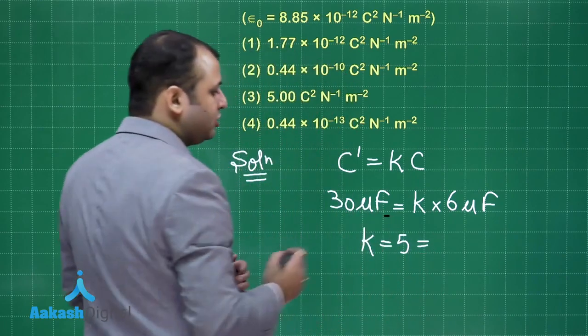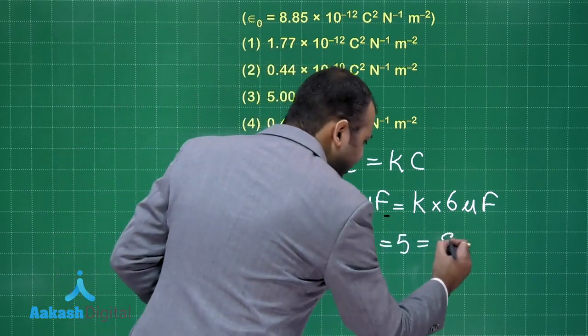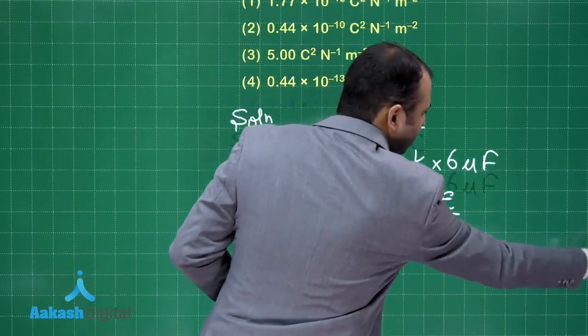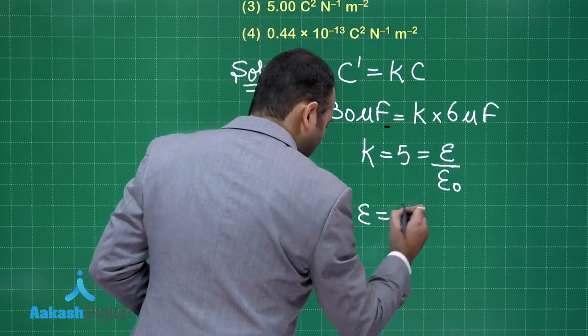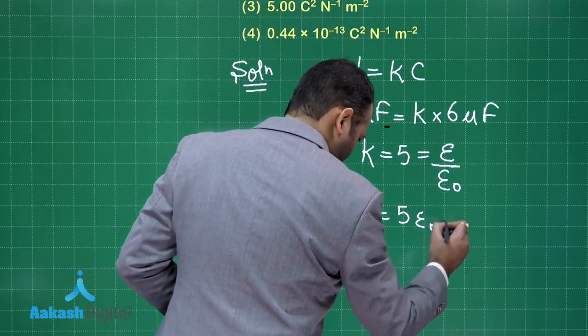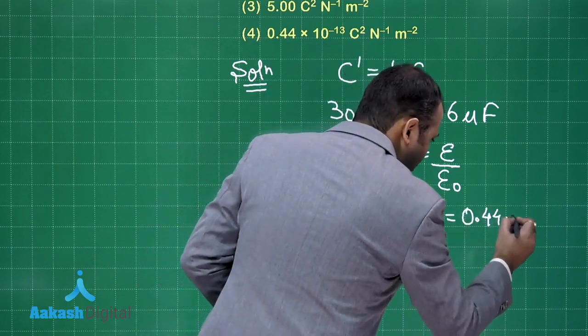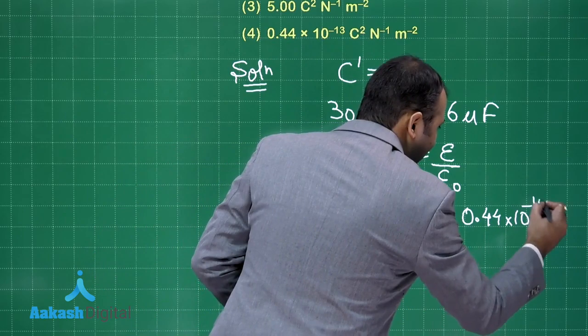This dielectric constant equals permittivity of medium divided by permittivity of free space. From this we can write epsilon equals 5 times epsilon naught. If you put out value you will get 0.44 into 10 to the power minus 10.